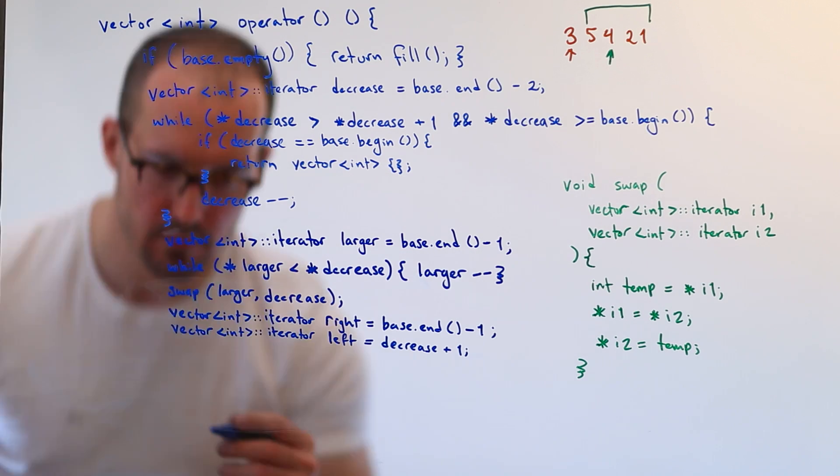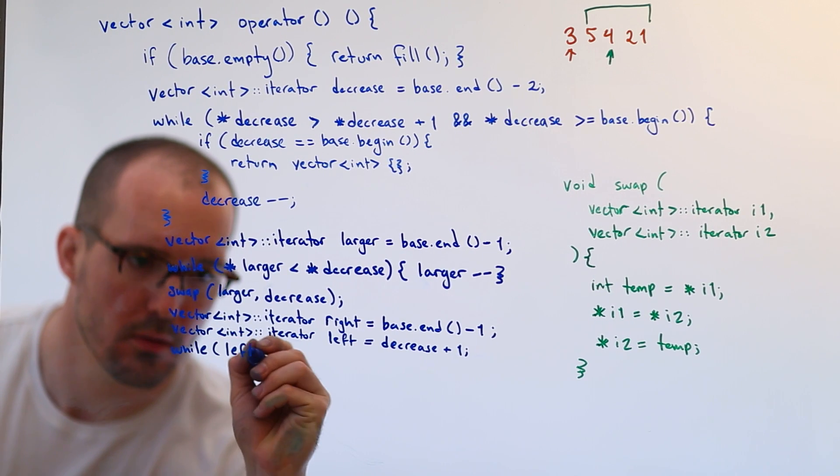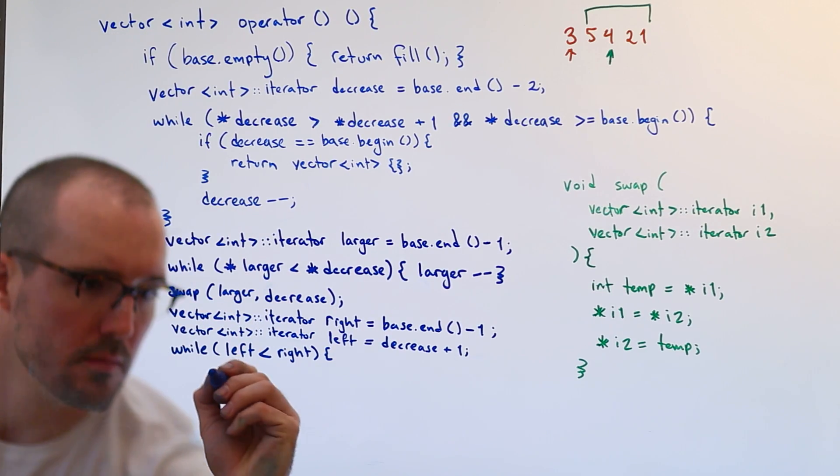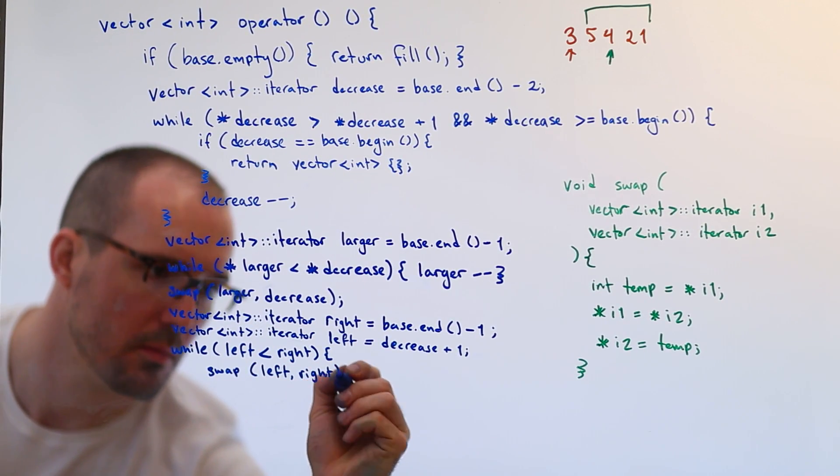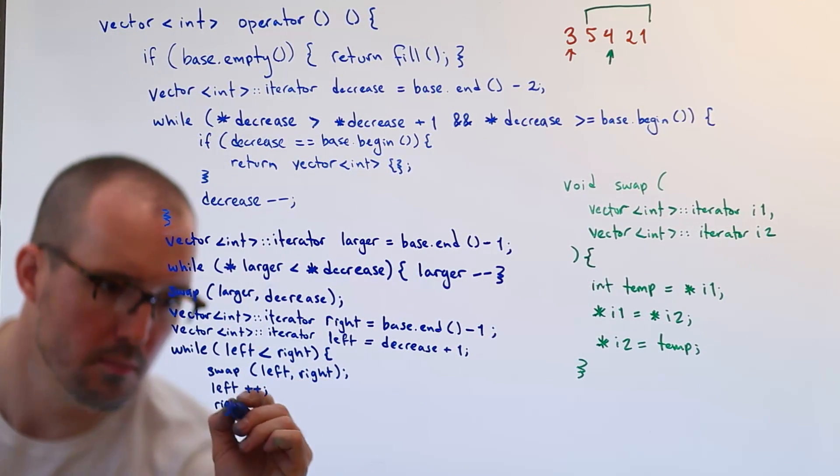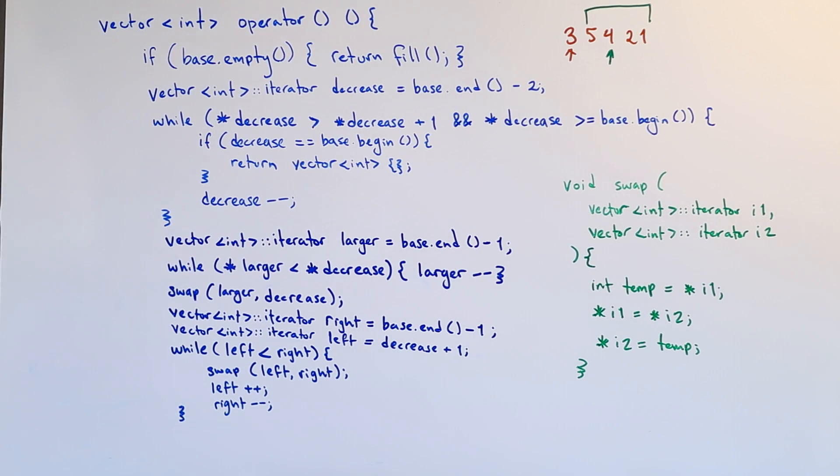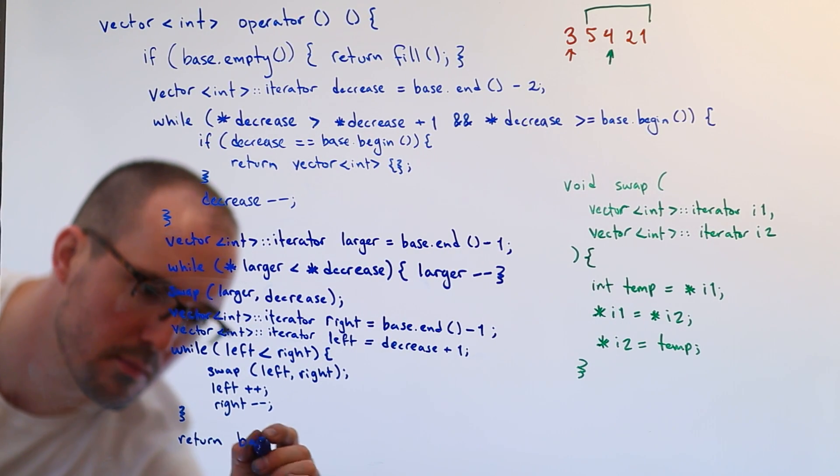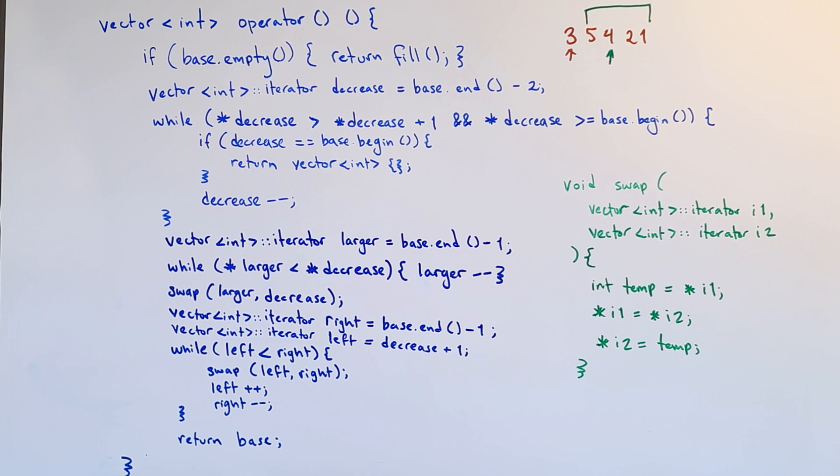So now it's another simple loop to reverse the remainder of the list. So we start from the left and we start from the right. We swap the value at each position with the value at the other position. And then we move both pointers inwards towards each other. And I believe with this, we're done. We have modified our list in place and now we can just return it.